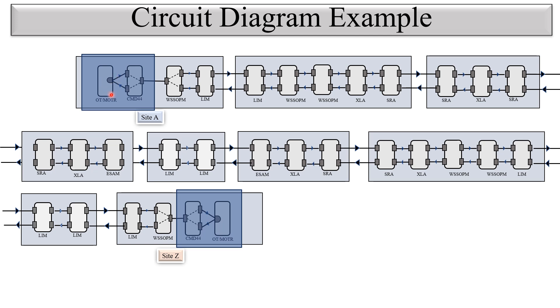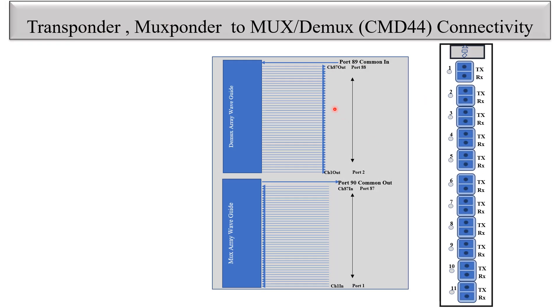One wavelength is going from one end to the other. I have taken this as a circuit reference and we will focus on the Transponder-Muxponder to CMD44 connectivity. On both sides you can see the same connectivity exists at both locations — we will discuss one side. You can see here this is the CMD44 and this is the Transponder or MUXponder — basically this is the MUXponder diagram.